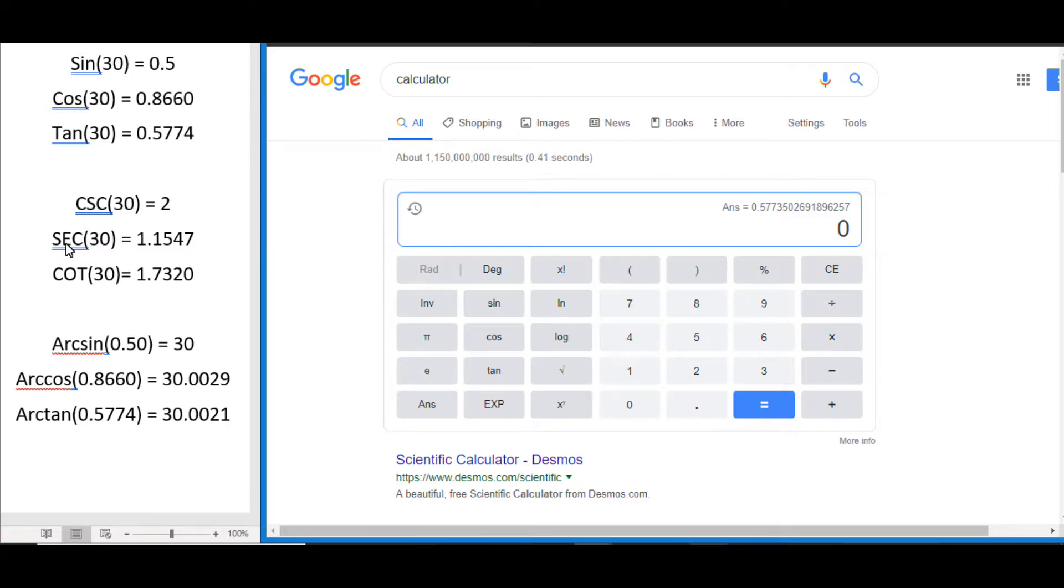Now what if we wanted to do cosecant, secant, or cotangent? Well, you can see this calculator doesn't actually have a button for that, so what you have to do is solve the corresponding function and then inverse the answer. So for cosecant that would be sine.